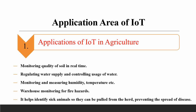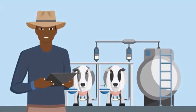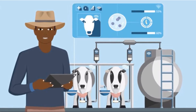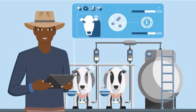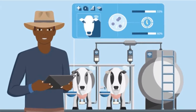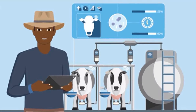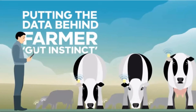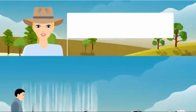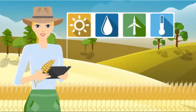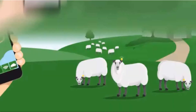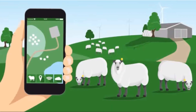IoT helps in preventing the spread of disease by detecting cases early. It monitors humidity and green areas, and supports cattle monitoring in the agriculture area.